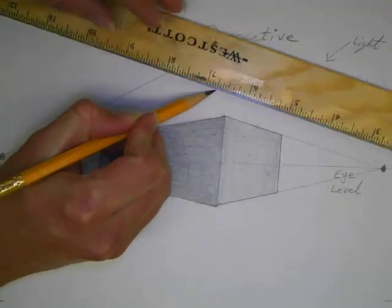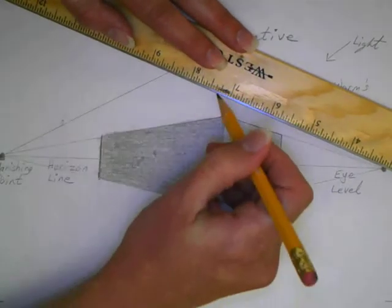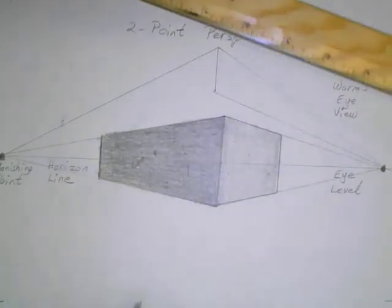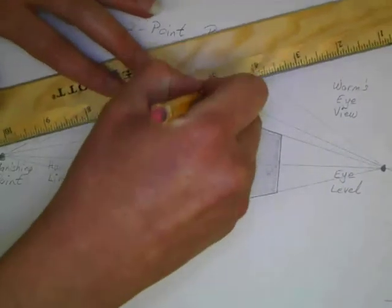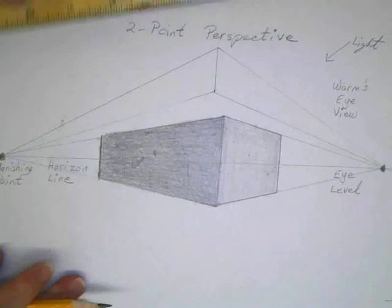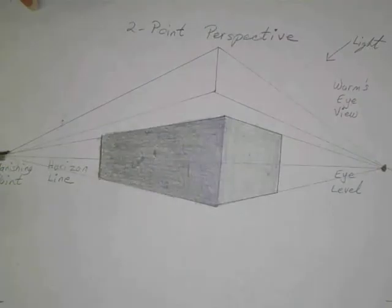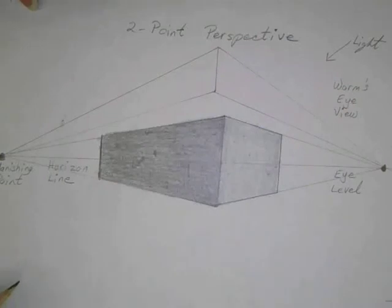And now, from the bottom to the right vanishing point, and from the bottom to the left vanishing point. See all these lines converge right here at these vanishing points, so they all meet and converge. That's why they're vanishing points.